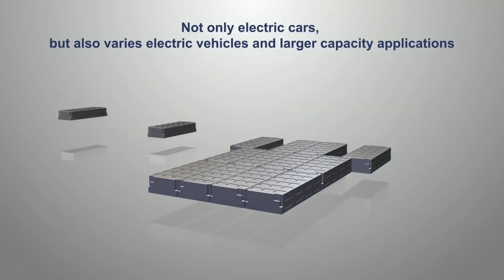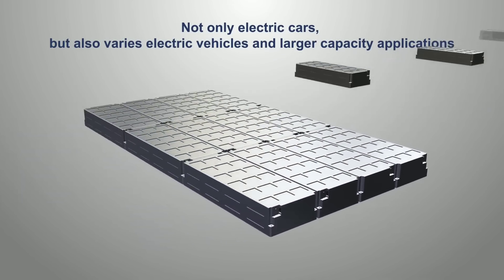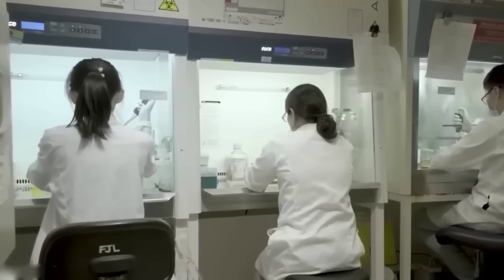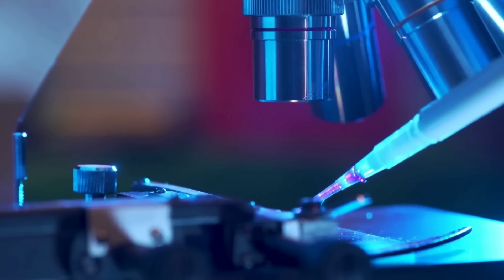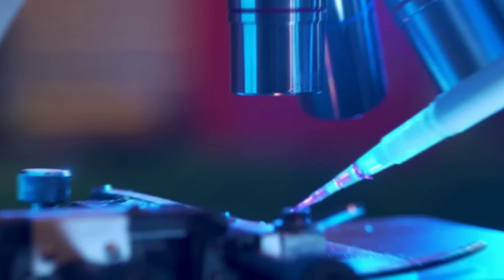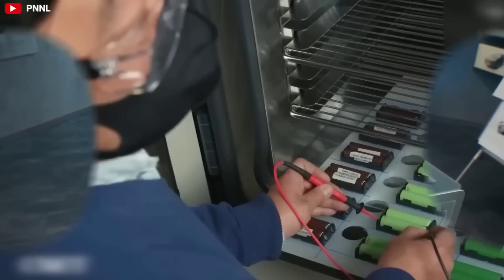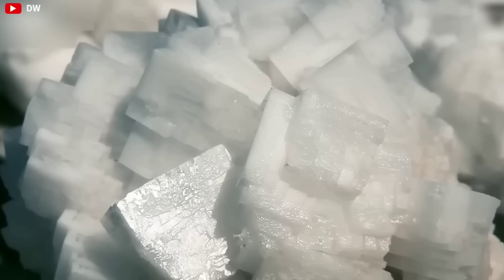One of the main challenges is to find a solid electrolyte that can perform well and safely in a battery. A solid electrolyte should have many properties, such as high ionic conductivity, low interfacial resistance, and good compatibility with electrodes. However, most of the existing solid electrolytes have trade-offs between different properties. For example, some solid electrolytes have high ionic conductivity, but low mechanical stability, or vice versa.